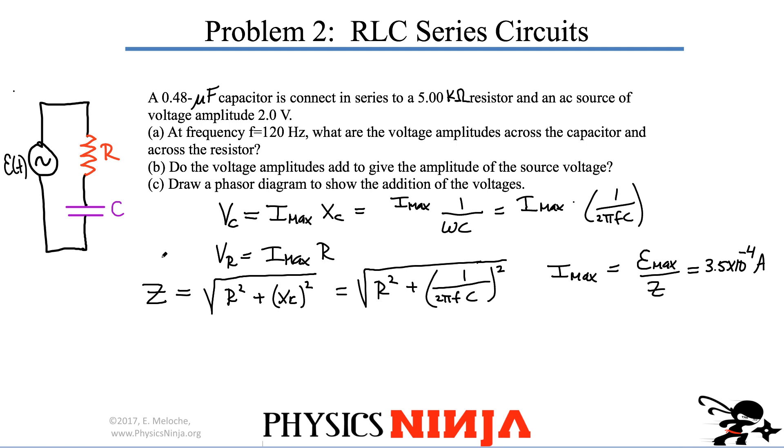You then go through and calculate what VC is. VC is pretty straightforward. Substitute the values, you get my Imax divided by 2 pi f multiplied by C. At the end of the day, I think I got 0.97 volts.